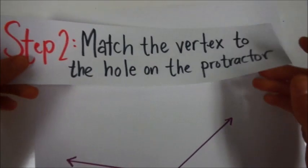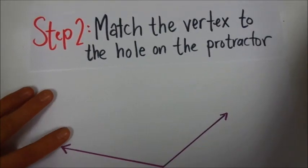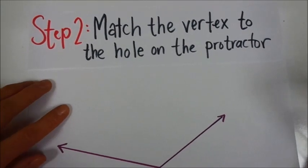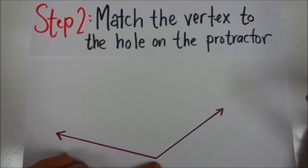If you are asked to find the exact measurement of an angle, then you will need a protractor, and you will need to match the vertex, that's the point where your two rays meet, to the hole on the protractor.